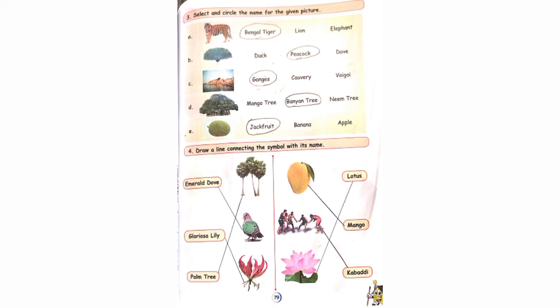Fourth one: draw a line connecting the symbol with its name. They have given a name, and in the next row they have given a picture. You have to connect name to picture. Emerald Dove: draw a line from Emerald Dove to the dove picture. Gloriosa Lily: draw a line to the Gloriosa Lily picture. Palm tree: draw a line to it.